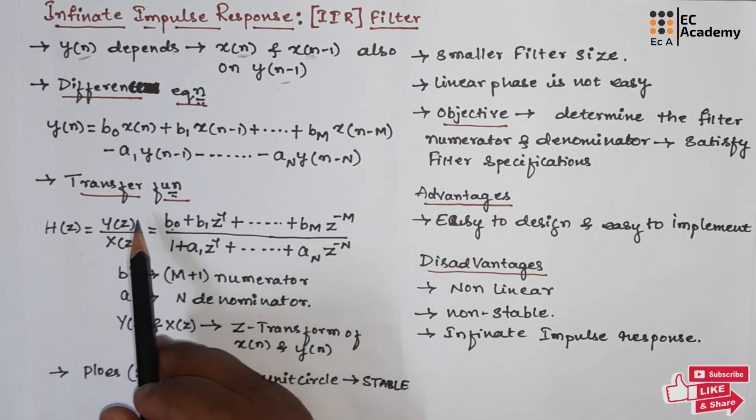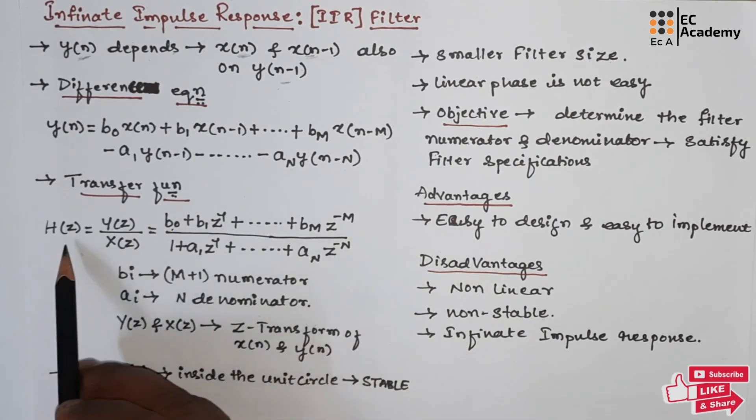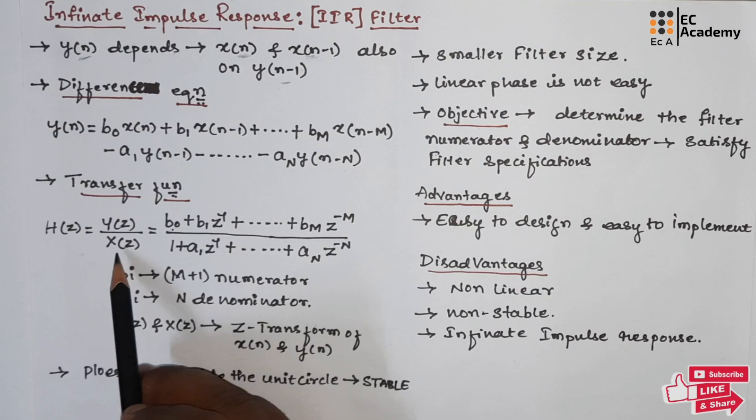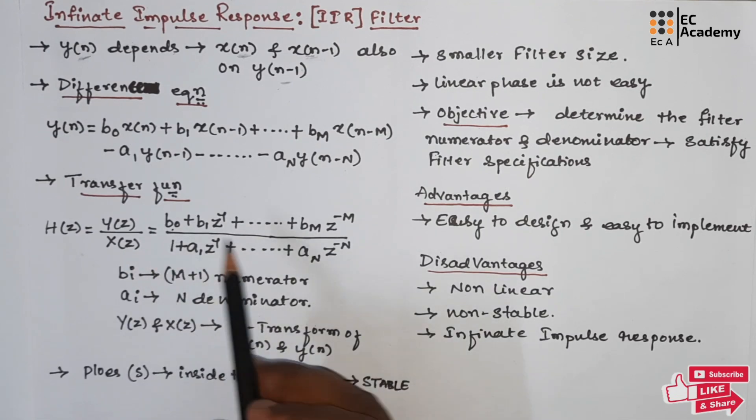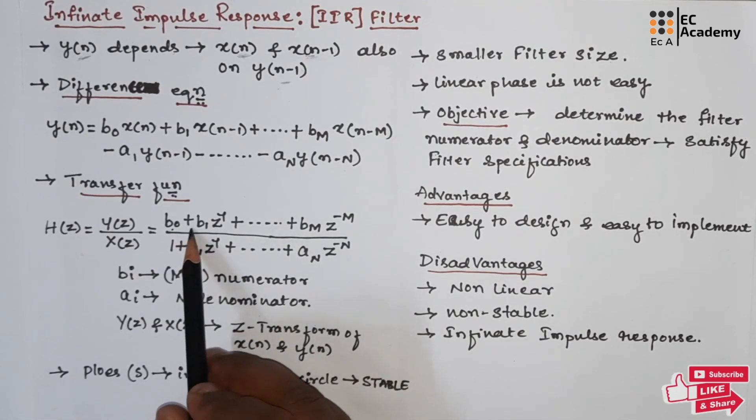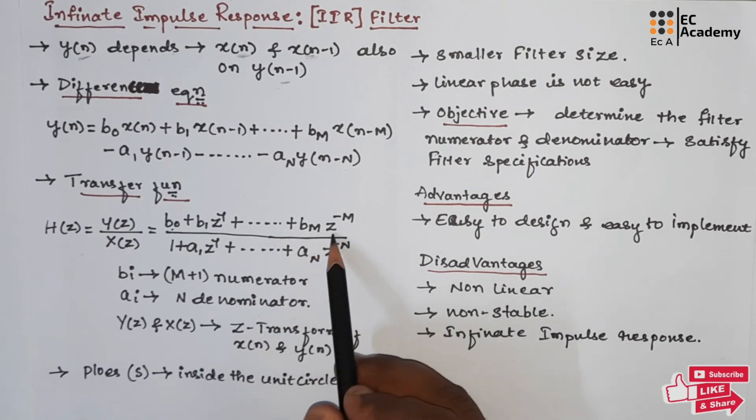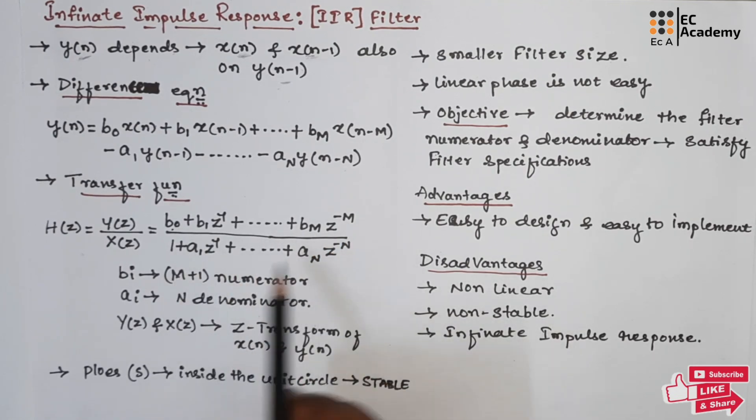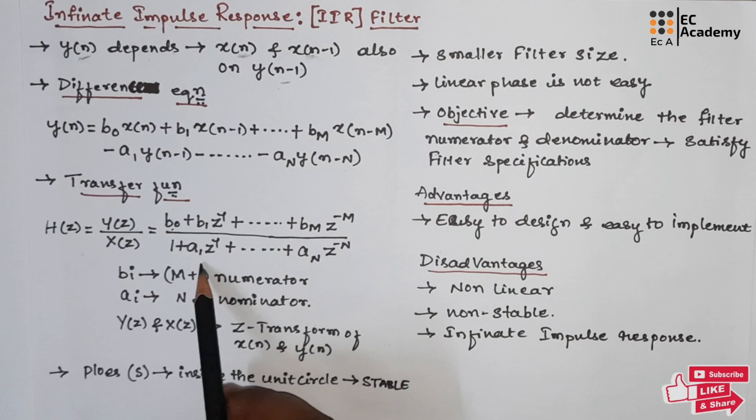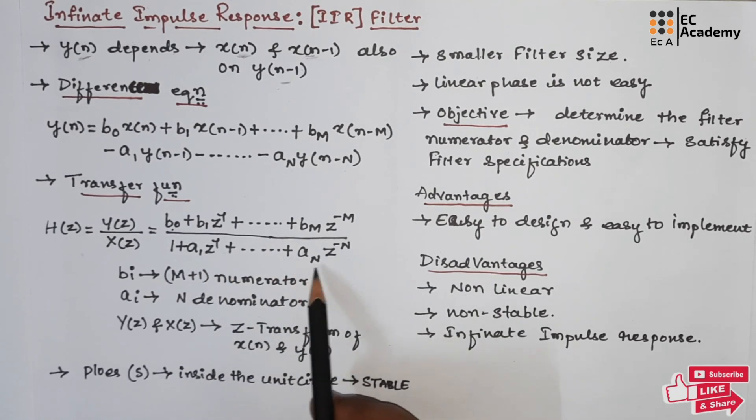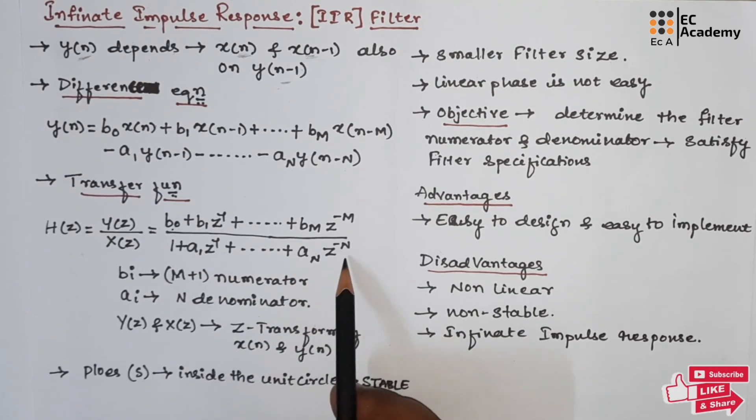Then the transfer function of the IIR filter can be given as H(z) equals Y(z) divided by X(z), that can be given as b0 plus b1 z inverse plus and so on bm z to the power of minus m divided by 1 plus a1 z inverse plus and so on up to an z to the power of minus n.